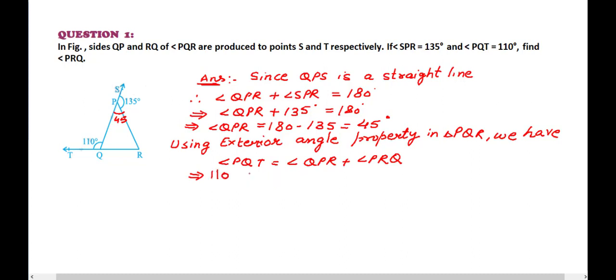110 is equal to 45 plus angle PRQ. So from here we can find the value of angle PRQ. Angle PRQ is equal to 110 minus 45 degrees, that is equal to 65 degrees. So this is our answer: angle PRQ is equal to 65 degrees.